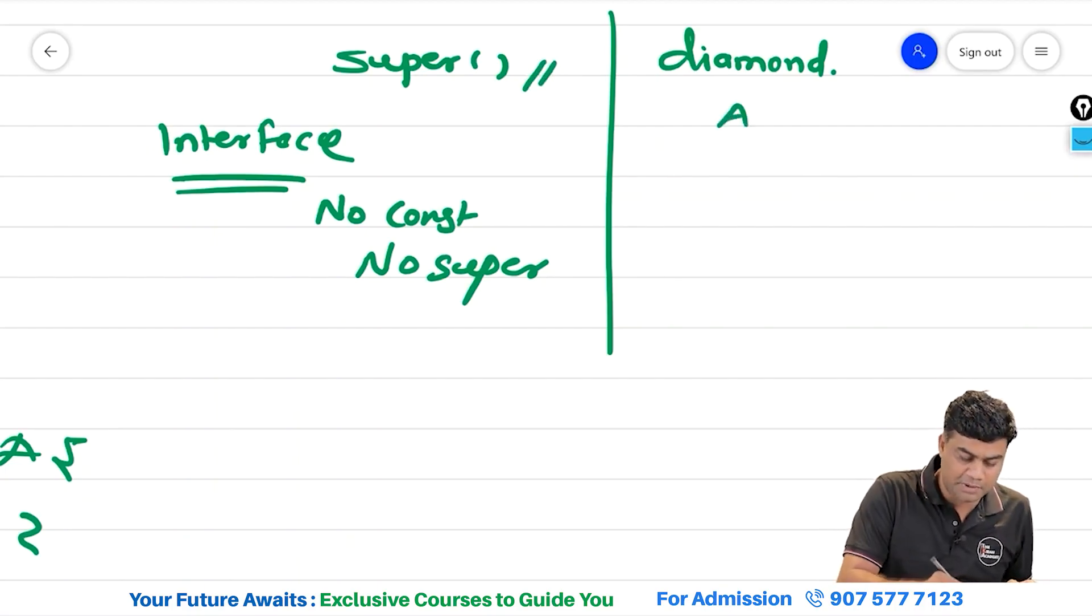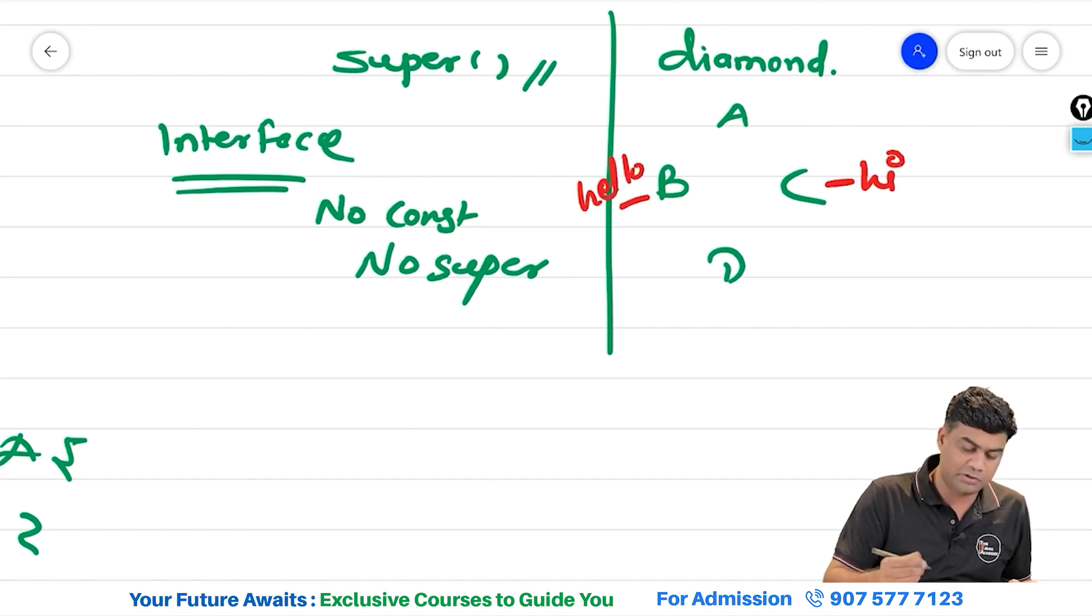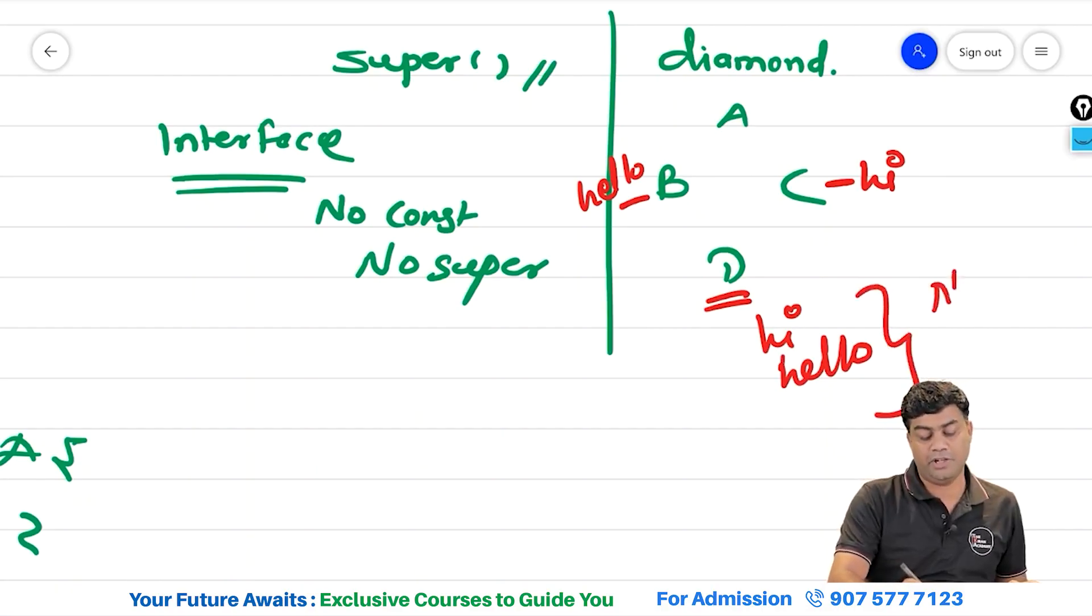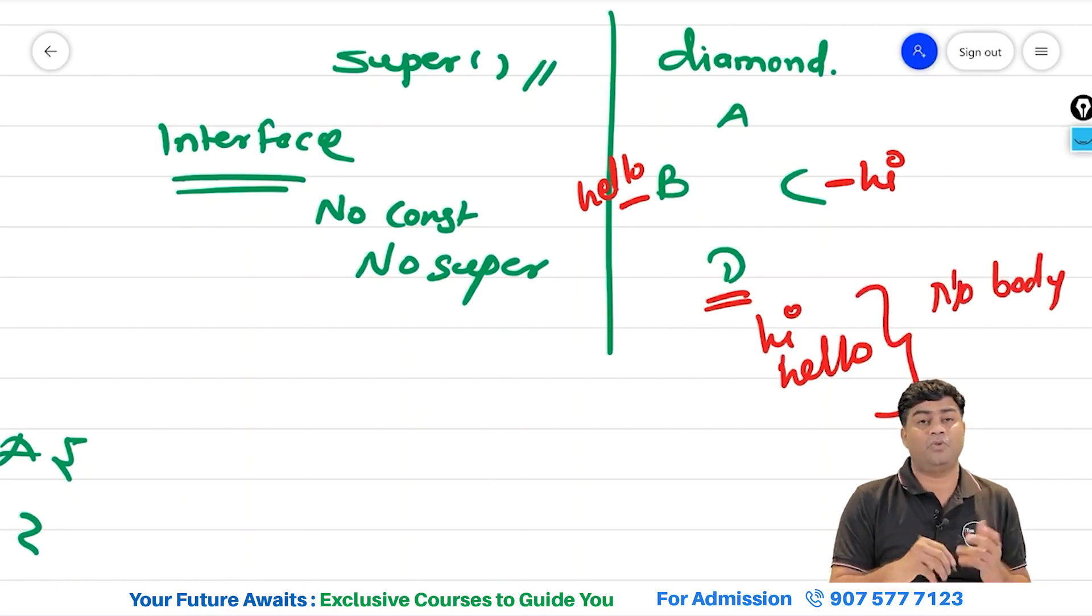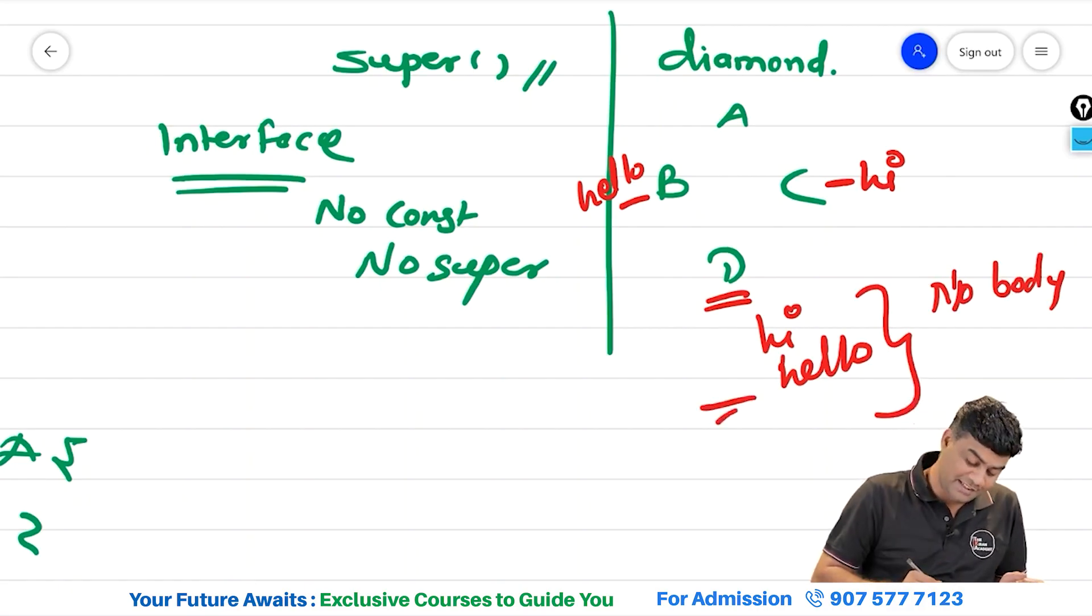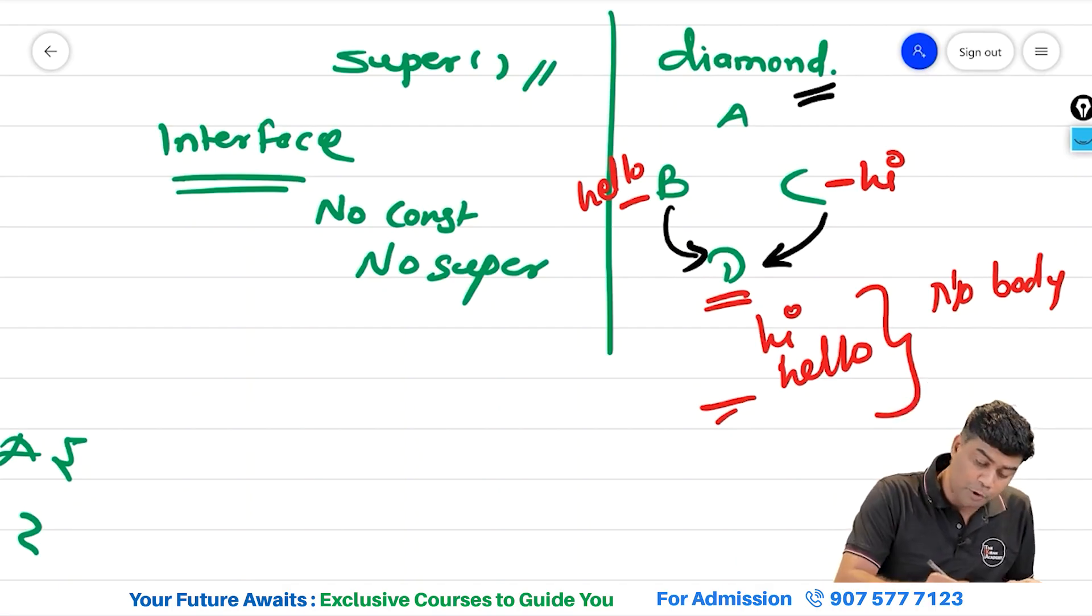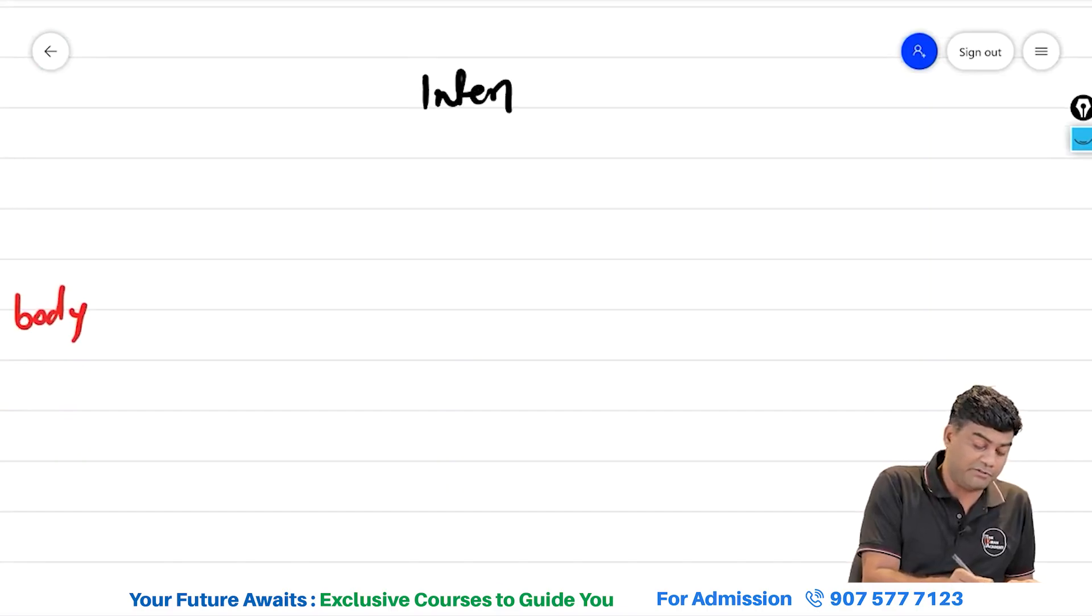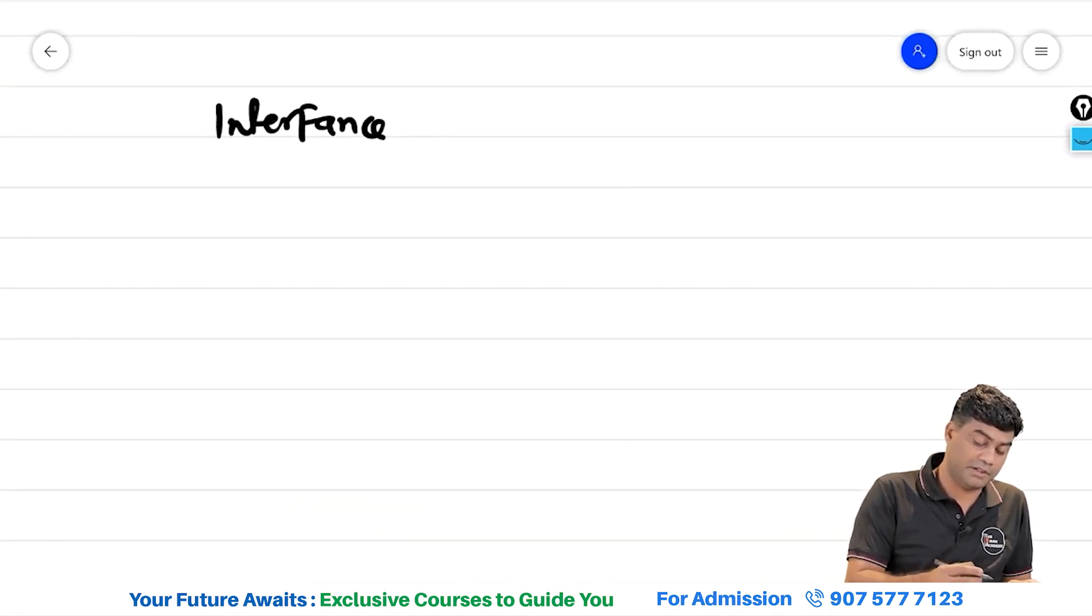Diamond problem, no problem. What was happening here in case of classes? Method of this and this method is saying hi. This method was saying hello. So issue was whether this D will get hi or hello. But in case of interfaces, no body. Only signature is there. Either it can have signature of B or signature of C. It is the same thing. Both problems are avoided in the interfaces. Therefore, it is allowed here.